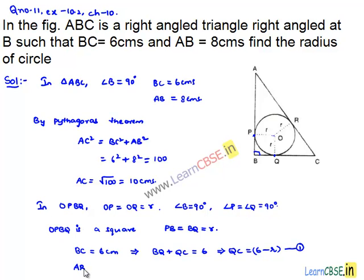Similarly, if we consider AB is equal to 8 cm, which implies AB can be written as AP plus PB is equal to 8, which implies AP is equal to 8 minus PB, that is 8 minus R. Let this be equation number 2.